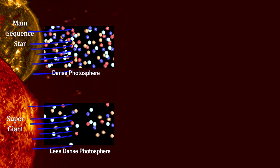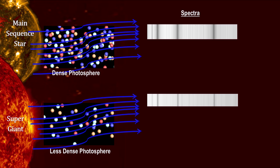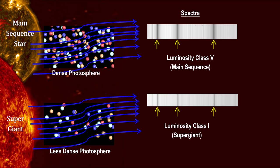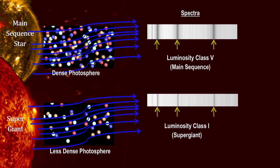It turns out that the photon absorption characteristics of closely packed atoms makes the spectral lines fuzzier. For a given spectral classification, the fuzzier the spectral line, the smaller the star.